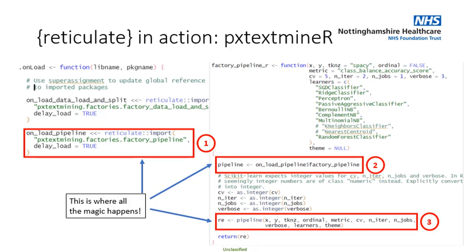So the only thing we need to do is, in step two, call the factory pipeline from the onload method on the left. Once we do that, in step three, it's now an R function — so we pass the arguments to it and run the pipeline. That's it. It's magically simple. It's incredible.